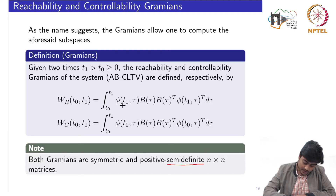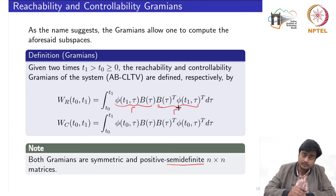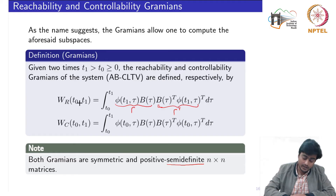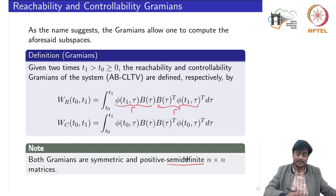It is straightforward to see that if we denote the integrand by a matrix Γ, then W_R = Γ·Γ^T. Taking the transpose of W_R again gives the integral of Γ·Γ^T, so the matrix is symmetric. Since Γ·Γ^T is analogous to a square of a scalar — always non-negative — this confirms that W_R is positive semi-definite, meaning it is either positive or zero.